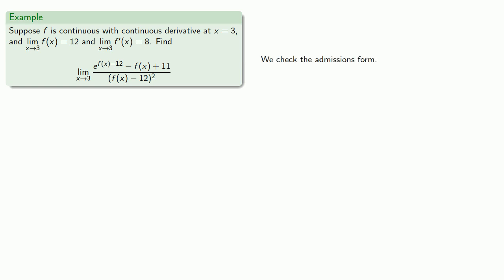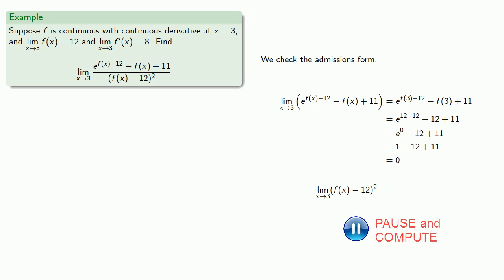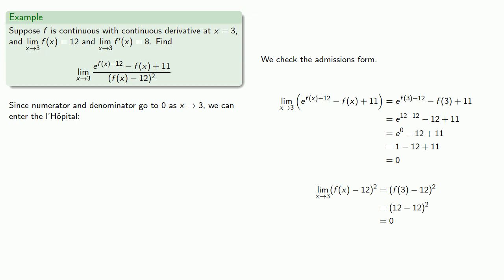So we should always check those admissions forms. As x goes to 3, our numerator goes to 0 and our denominator goes to 0. And since numerator and denominator both go to 0 as x goes to 3, we can enter the L'Hopital.